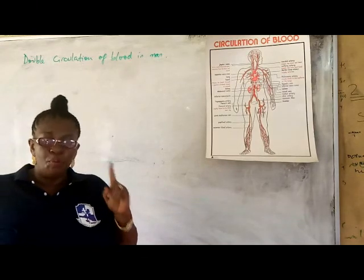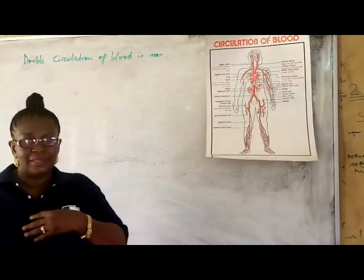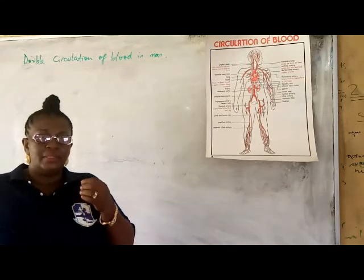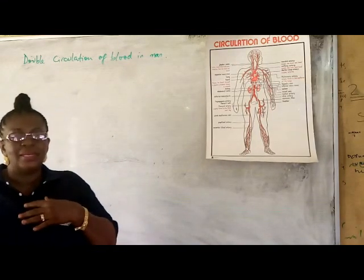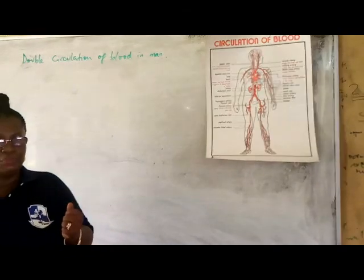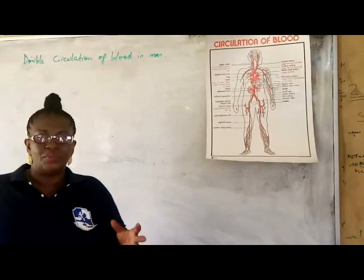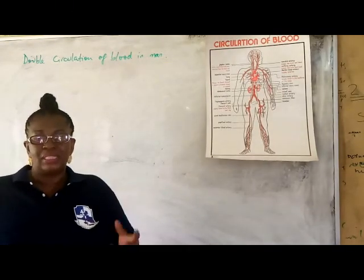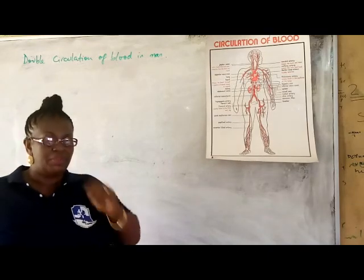The pulmonary circulation is the circulation between the heart and the lungs, while the systemic circulation is between the heart and every other part of the body. Now we want to start with the real engine, which is the heart itself, because it seems to be in the center of both systems.